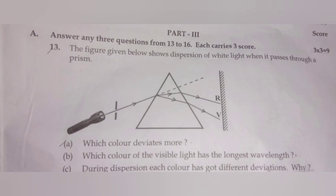13. The figure given below shows the dispersion of white light when it passes through a prism. (a) Which color deviates more? Violet color deviates more.